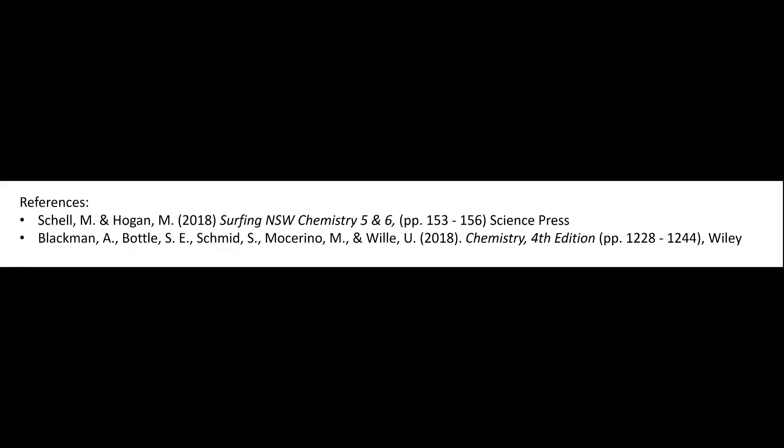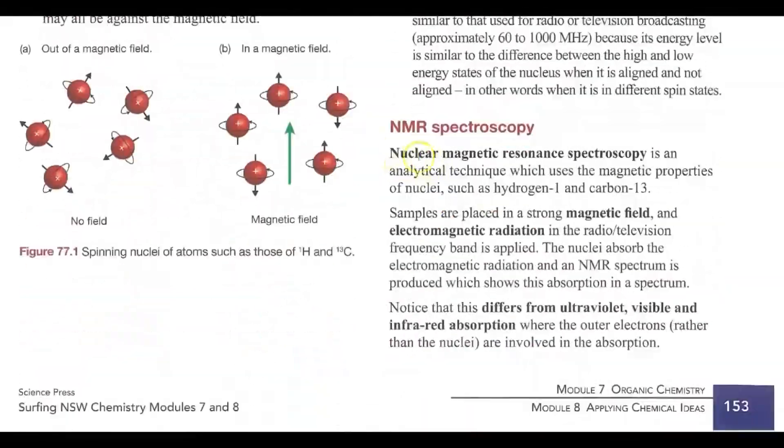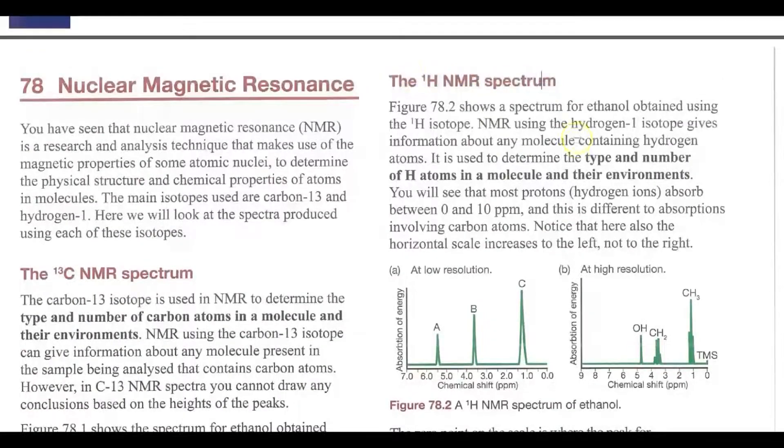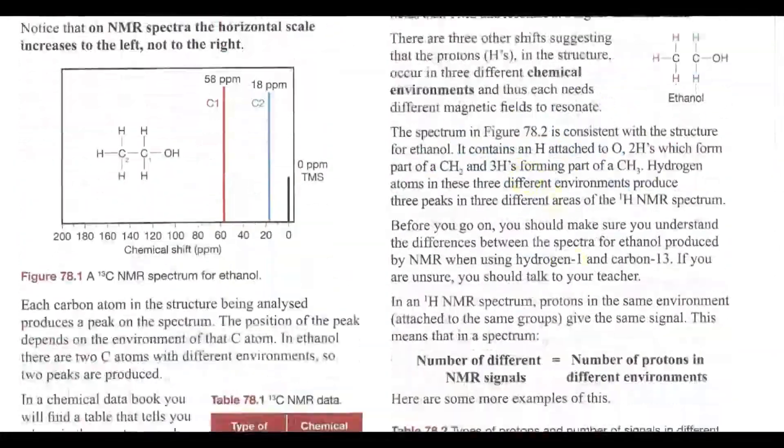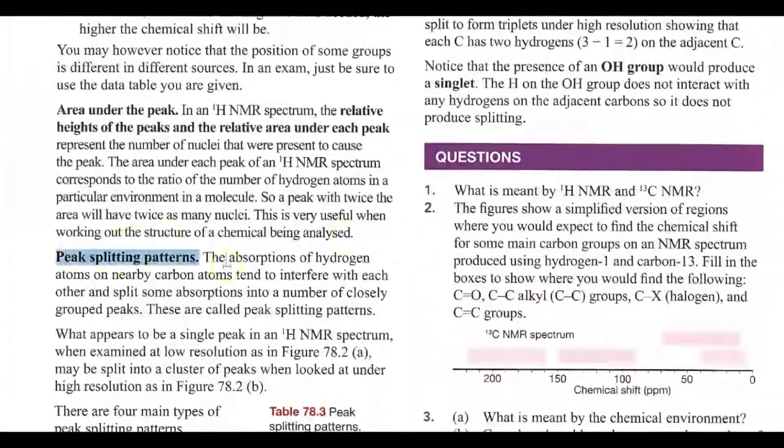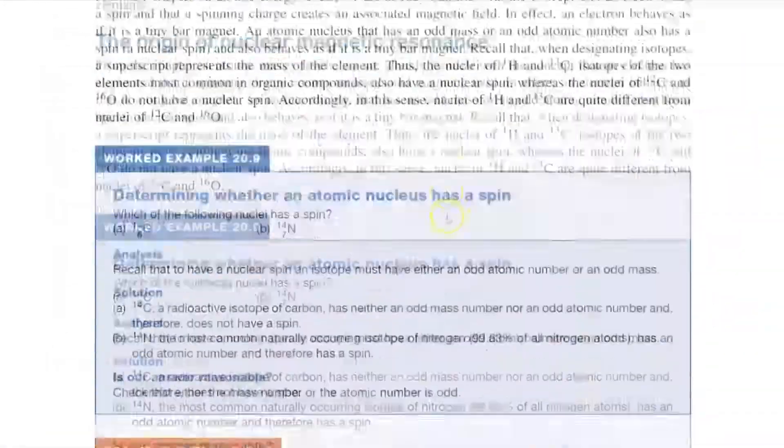For this video, the following references were used. Shell and Hogan have a couple sections which summarize nuclear magnetic resonance in general and also goes into specifics with hydrogen NMR, including the expected chemical shifts of different hydrogen environments and peak splitting via the N plus 1 rule.